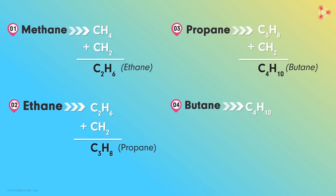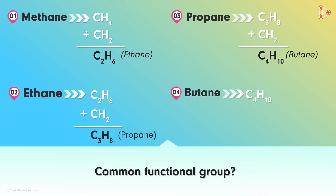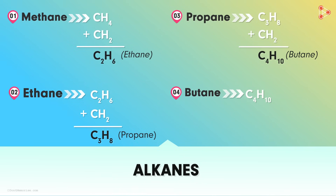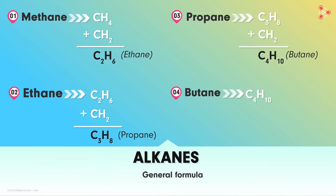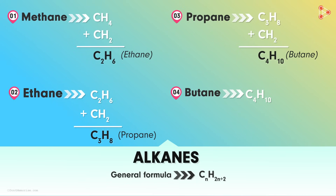These compounds are in series, occurring in succession, and they share the same functional group — alkane. That means the compounds here will have the same general formula. In this case, the general formula for alkanes is CₙH₂ₙ₊₂. So all of these compounds follow this general formula, even though they have different molecular formulas.